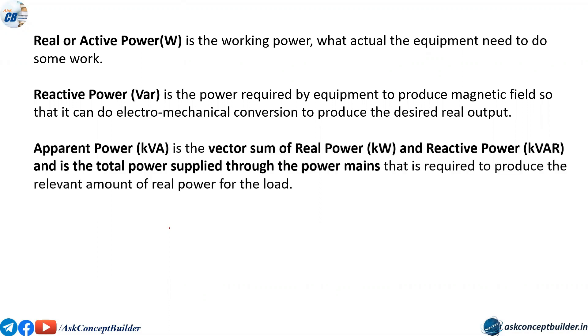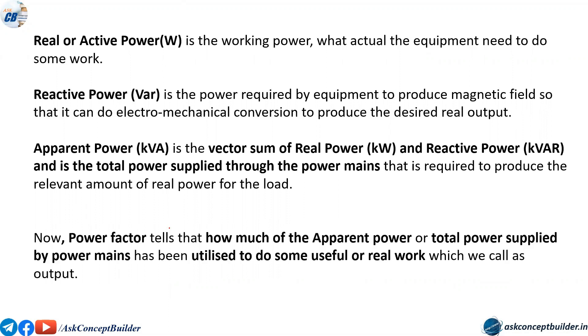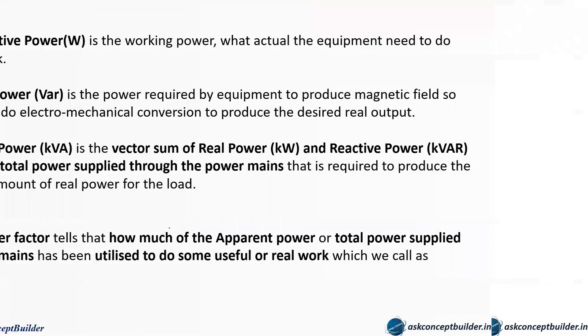The active power is observed by us, but reactive power is consumed within the machine for producing the magnetic field. Now, what is apparent power? It is the vector sum of active and reactive power, or it is the total power consumed from the supply. Now, what is power factor? The power factor tells us how much of the apparent power — the total power supplied by the mains — has been utilized to do some useful or real work. The power factor ranges from zero to one.